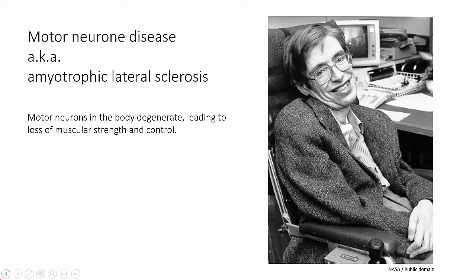Motor neuron disease, also known as amyotrophic lateral sclerosis, is the condition that Stephen Hawking lived with for most of his life. The cause is still not understood, but it occurs when motor neurons degrade, meaning that the CNS cannot properly control the muscles of the body.